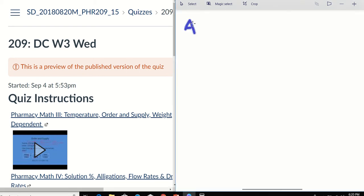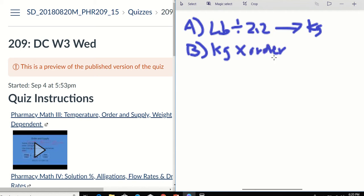So of course, step A, take the pounds and you divide by 2.2 to get to the kilos. And then for Part B, you take the weight in kilos times the order, and that will give you the daily amount.